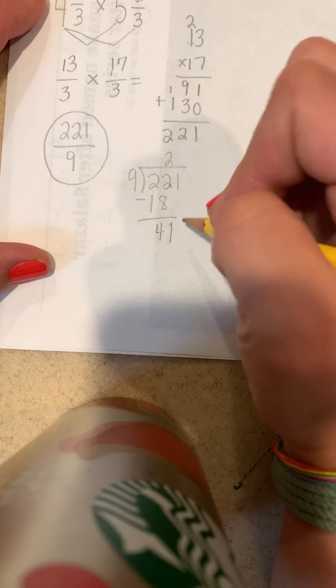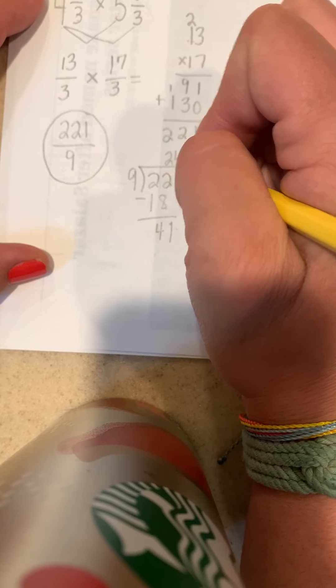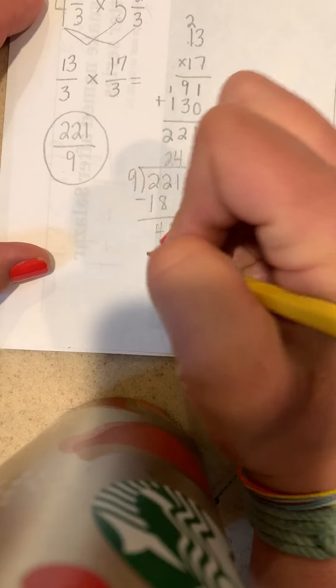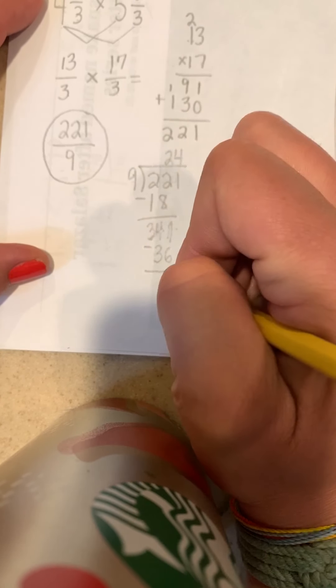I'm then going to bring down the 1 to continue my work. 41 divided by 9. Let's see, I think I can get as close as 36, which is 9 times 4. I got as close as 5 away.